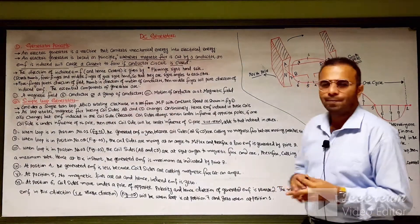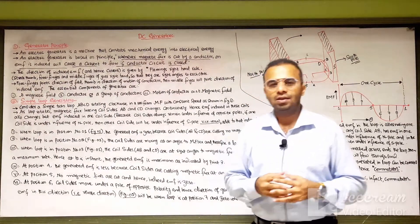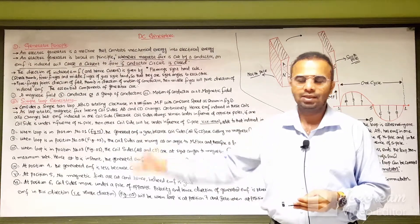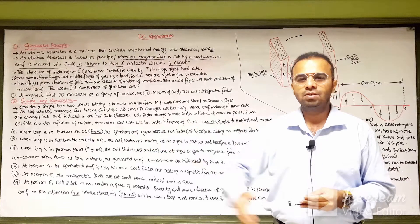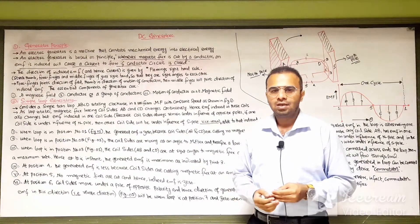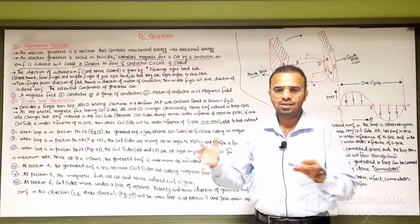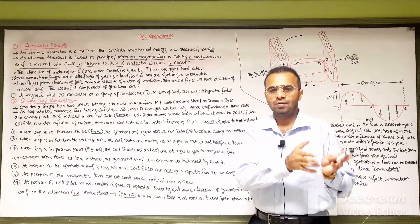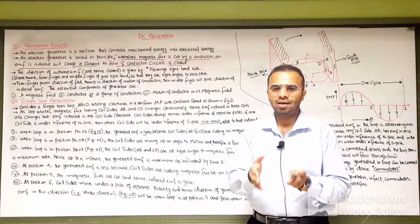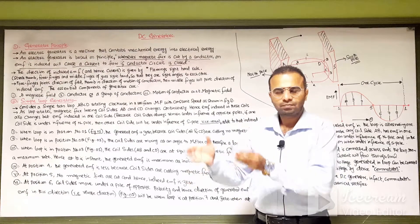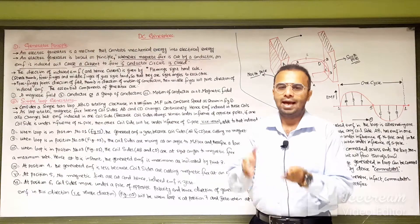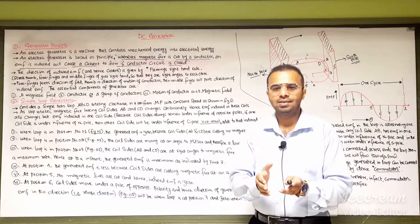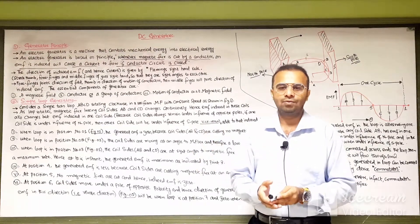A generator is an electrical machine which is used to convert mechanical energy into electrical energy. This is the fundamental definition of the generator. It requires mechanical energy given through the prime mover, which is the source of mechanical power. The prime mover is coupled on the same shaft as the generator, and the generator converts that mechanical energy input into electrical energy output.